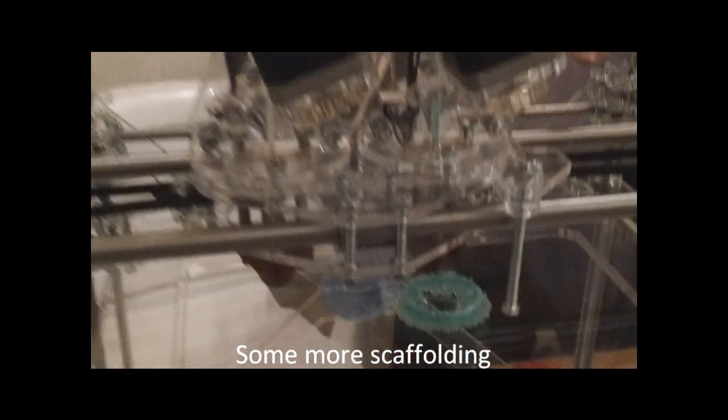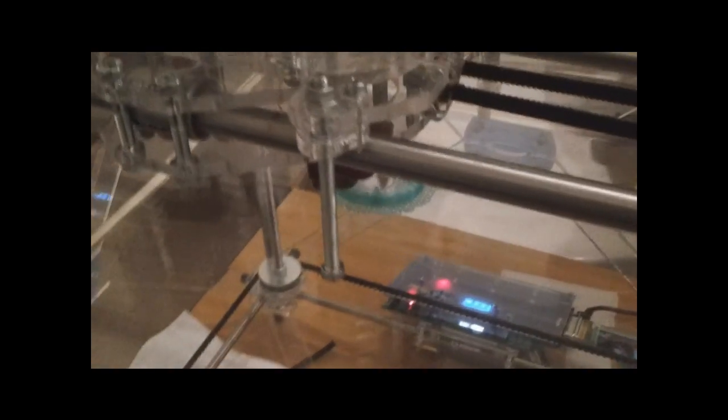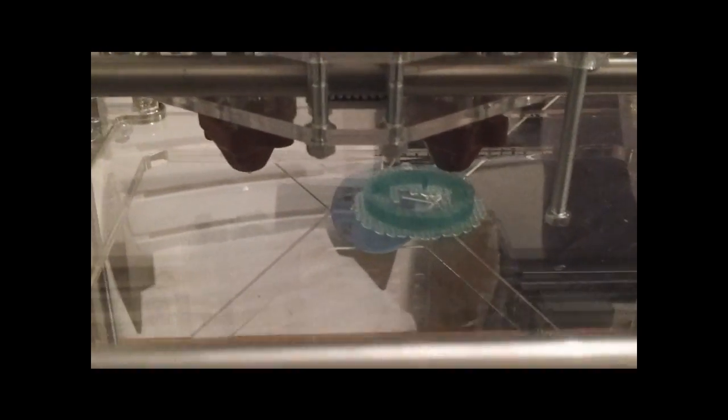Now what it's doing is it's printing a very thin scaffolding layer again. I don't know if you can see it. Which I think is the thinnest it can print, which is point one two five.